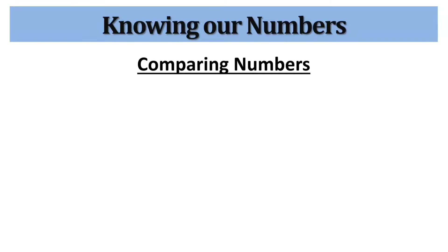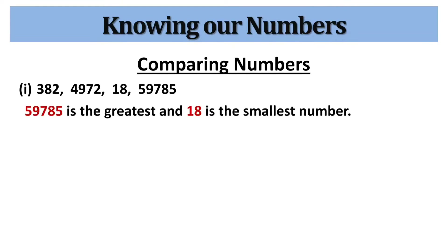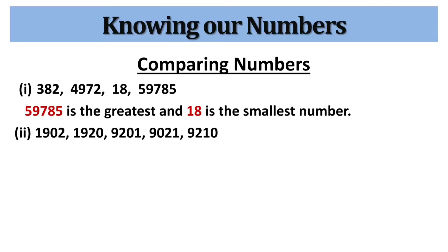Numbers of one digit, two digits, up to six digits are not new to us. Now let's see how to compare these numbers. Here we have two-digit, three-digit, four-digit and five-digit numbers. It is very obvious that the number with fewer digits is the smallest, and the number with more digits is the greatest. Here 59785 is the greatest and 18 is the smallest number.